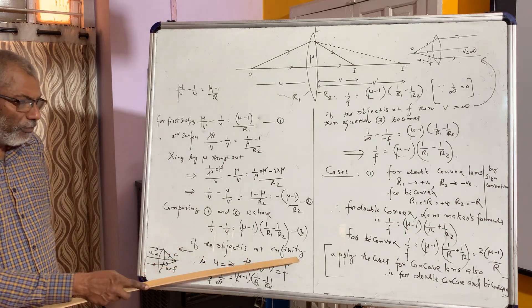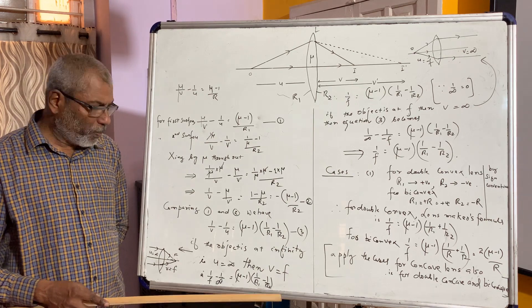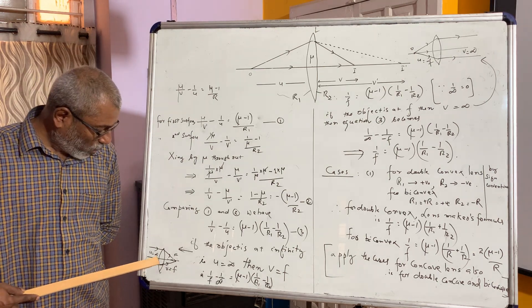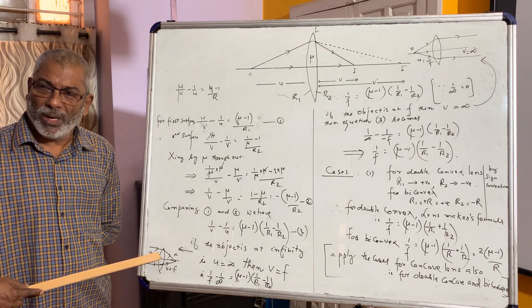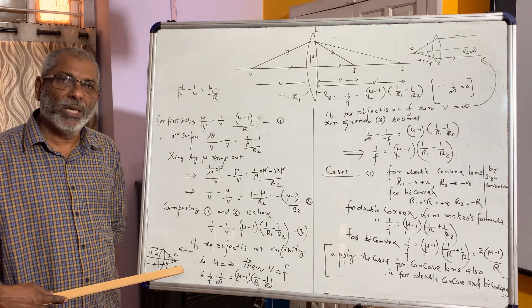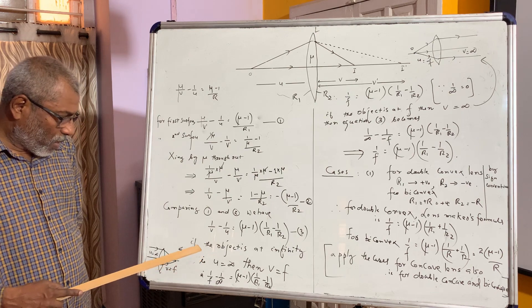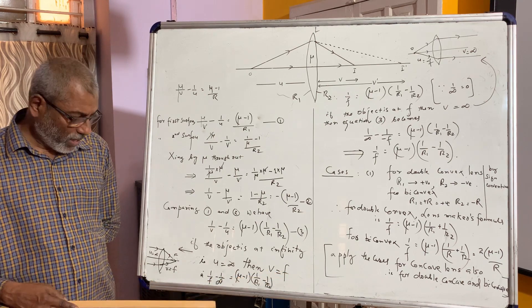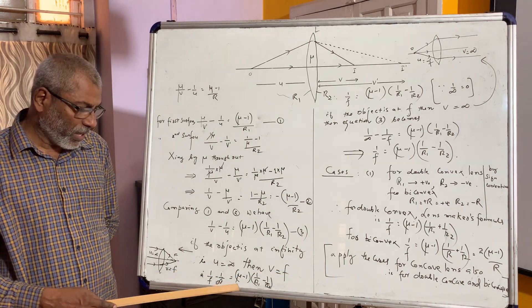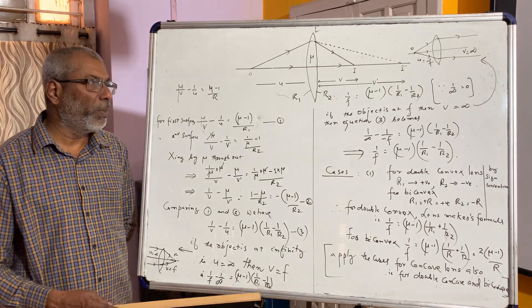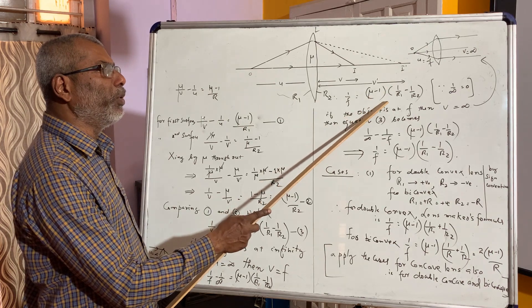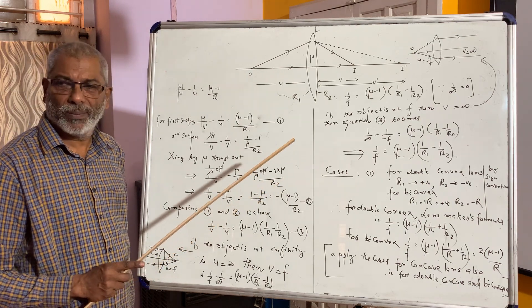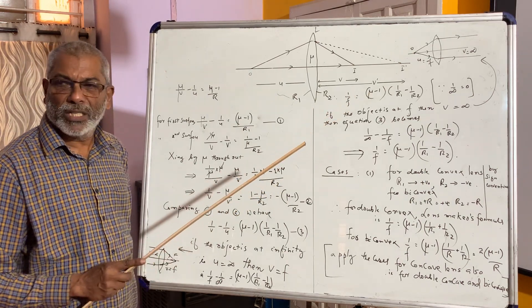If the object is at infinity — that is, U is equal to infinity — then the image distance is the focal length, so V is equal to F. Substituting: 1/F minus 1/infinity equals (μ minus 1) into (1/R1 minus 1/R2). Since 1/infinity is equal to zero, we get 1/F = (μ minus 1)(1/R1 minus 1/R2). This expression is called the lens maker's formula.